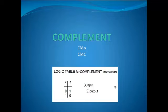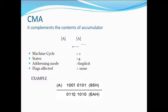This is the example of the XOR instruction. Now we have the complement instruction. This is the logical table — it complements the input. In CMA, it complements the contents of the accumulator. It has one machine cycle, four states, implicit addressing mode, and none of the flags are affected.